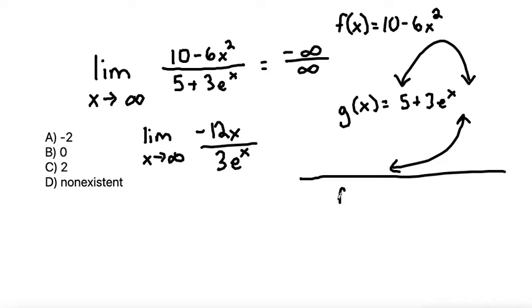And if our top function, we'll call f of x is equal to negative 12x, that's going to be a straight line with a slope that's going down. So that's going to, as x approaches infinity or goes to the right, it will go, the function will go down to negative infinity. So the numerator is going to be negative infinity once again.